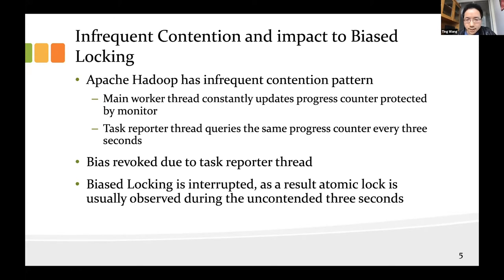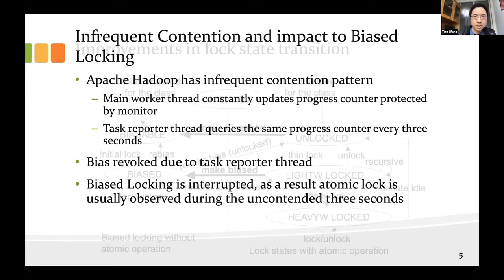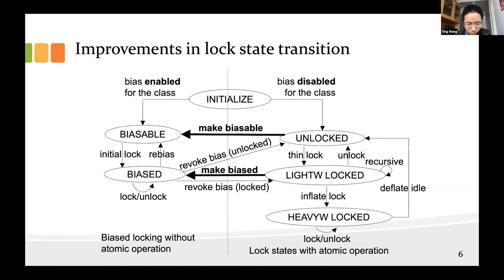Every three seconds, the progress counter will be contended, and this will lead to the bias being revoked. The net result is that we typically observe atomic operations during the uncontended three-second intervals — even though there is actually no contention at all during those three seconds. To address this case for bias locking, we are proposing a change in the lock state transitions. Particularly, we added two paths from atomic states back to the biased states.